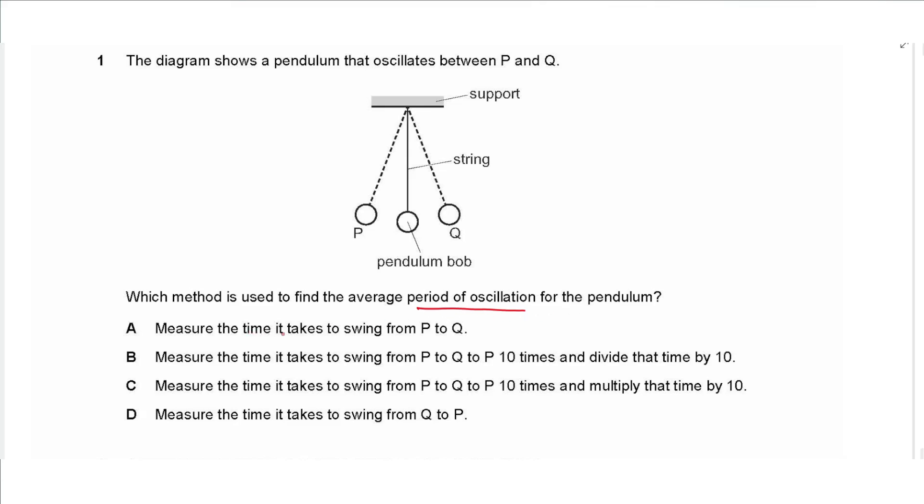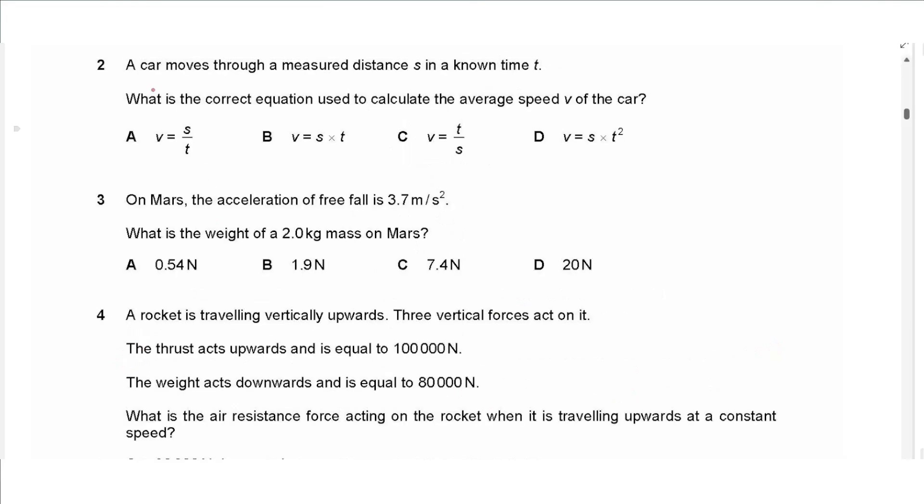Measure the time it takes to swing from P to Q, that's half a cycle. Measure the time it takes to swing from P to Q to P 10 times and then divide by 10. Yes, that is the best way. Measure time it takes to go from P to Q to P 10 times and then multiply by 10, no. Measure time it takes from Q to P, again no. So the answer is B.